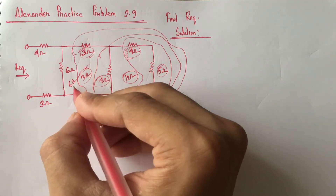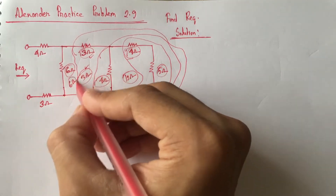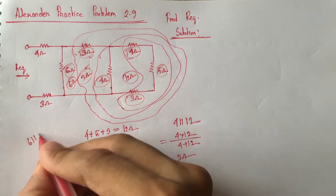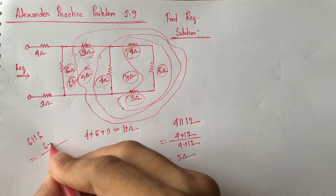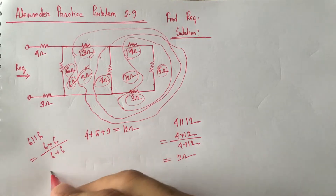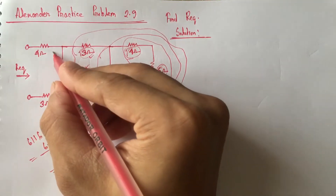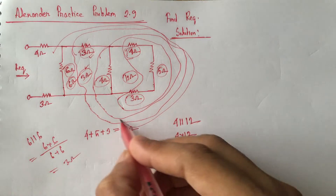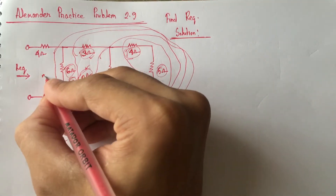Now, this 6 ohm and this 6 ohm resistance are in parallel. Two equal 6 ohm resistances in parallel can be replaced by a resistance of 3 ohm. So the equivalent resistance of this whole part is 3 ohm.